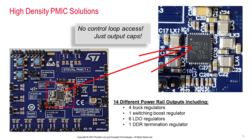First, none of the 14 power rails provide access to their respective control loops. Second, the buck regulators in this PMIC and in most PMICs use adaptive constant on-time control. Constant on-time provides excellent transient response, but it's neither linear nor time invariant, which are two necessary conditions for stability analysis using traditional Bode plots.